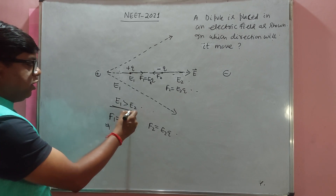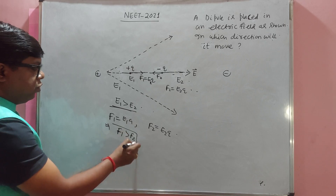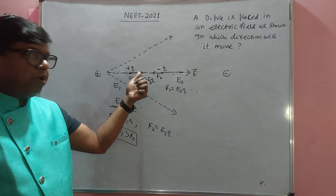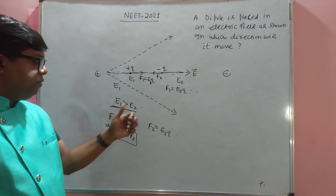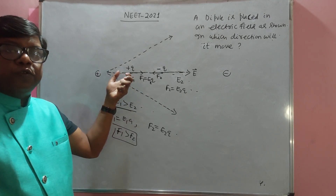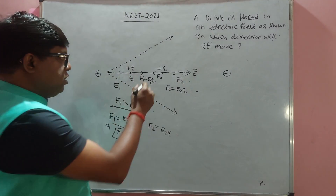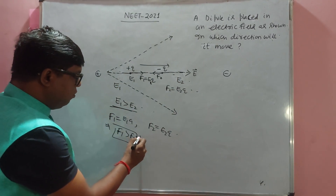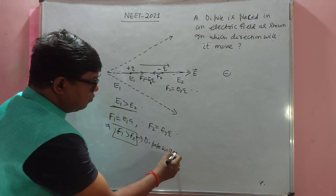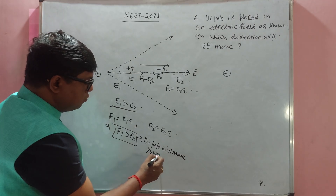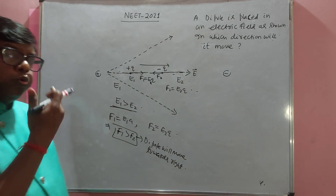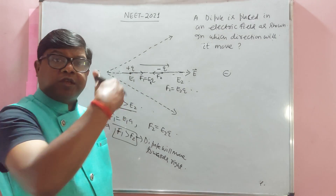Since e1 is greater than e2, F1 must be greater than F2. The positive charge experiences a force towards the right, and the negative charge experiences a force towards the left. Since F1 > F2, the dipole will experience a net force towards the right. So the answer is that the dipole moves towards the right.